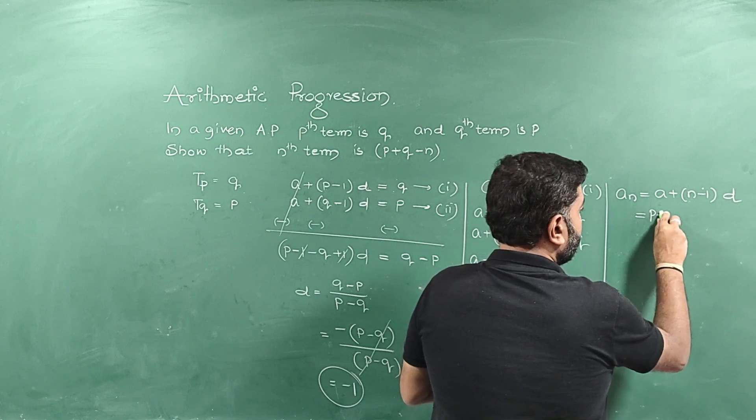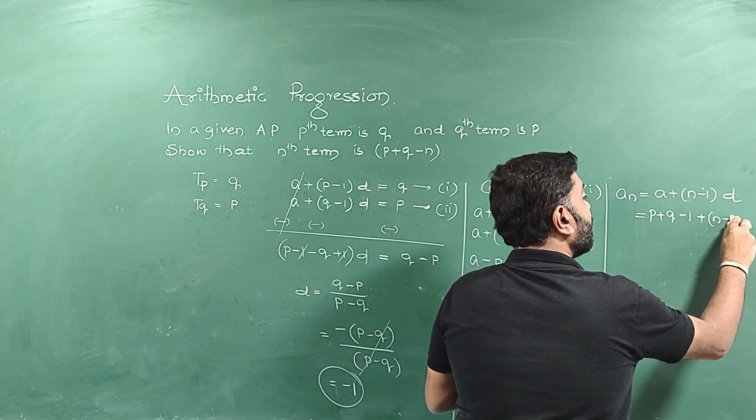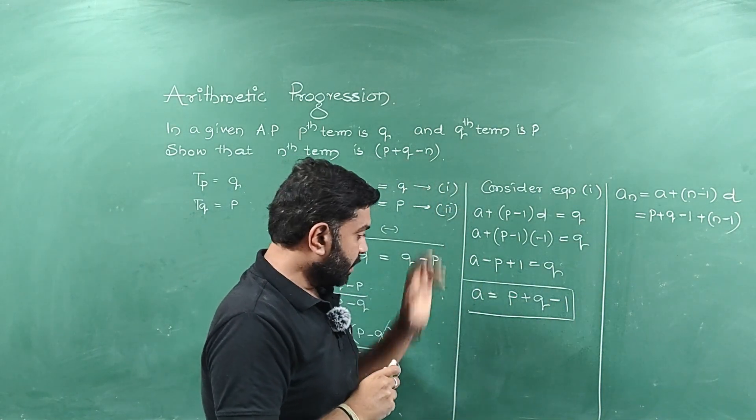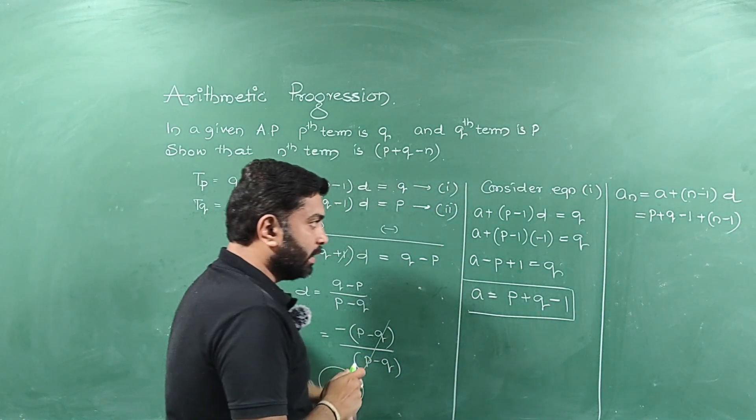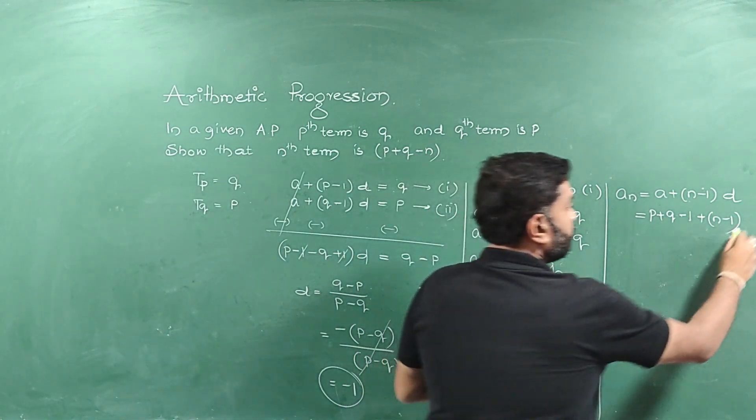So this is P plus Q minus 1 plus N minus 1 as it is. Because we are calculating nth term. The value of N is N only. And the value of D is already calculated. It is minus 1.